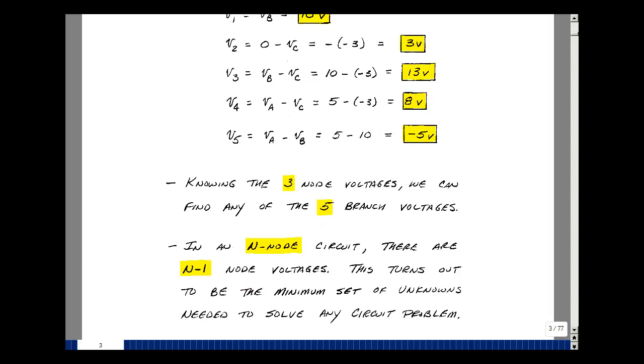In an n node circuit, there are n minus 1 node voltages, because we're going to pick one node as reference. This turns out to be the minimum set of unknowns that you need to solve any circuit problem.